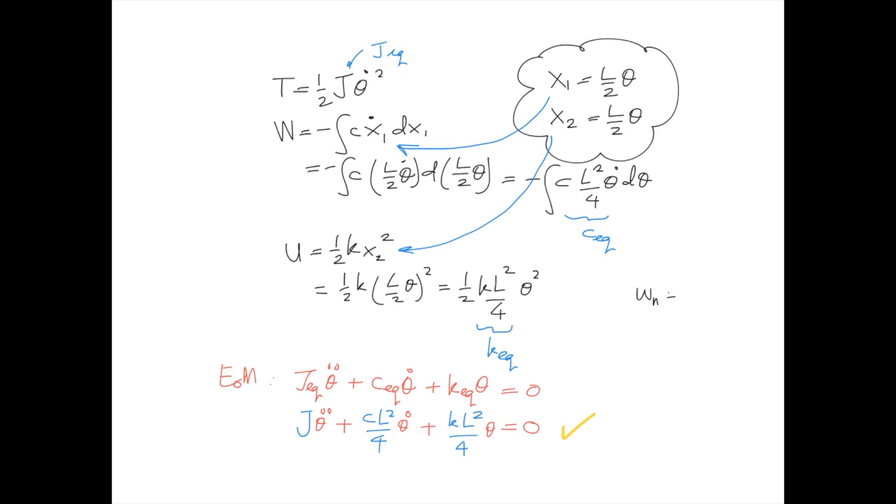The natural frequency of the system is the square root of K equivalent divided by J equivalent. Okay guys, that is how to derive equation of motion using system equivalent analysis or energy method. You can practice yourself using different generalized coordinates x1 or x2, and you should end up having the same natural frequency as here.